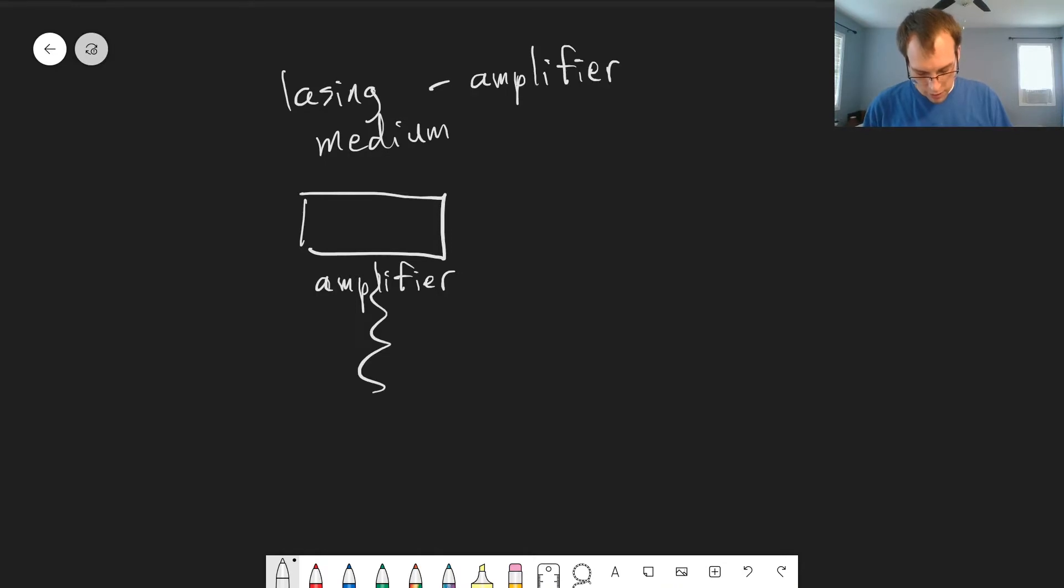So that acts as our amplifier. We send in our pump, whether that's light or electricity or whatever, and the way we achieve an actual laser is we need a couple of mirrors as well. So usually we have something that's very highly reflective. There are other ways of doing this, but this is 99% plus reflective on this side.